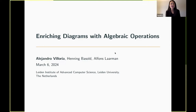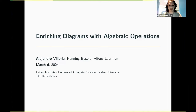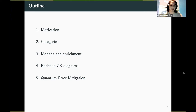Hi everyone! Today we have Alejandro Villoria with us, and he's going to tell us about enriching diagrams with algebraic operations. Today we'll be talking about doing this work with Hennin Basel and Alphonse Lerman. In this paper, we introduced an extension of the ZX calculus using algebras and their monads to reason about probabilistic operations in ZX. I'm going to give you first a bit of motivation, a brief overview of how we did it and how it looks like.